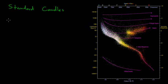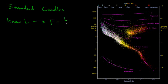In very general terms, what a standard candle is, is some object or group or class of objects where we know the luminosity — we know how bright these objects intrinsically are. And if we know the luminosity and we view these objects through a telescope, then by using our flux equation, this equation that relates the light flux from a distant object — how much light is actually hitting my telescope — to the brightness of the object and how far away that object is from our telescope.